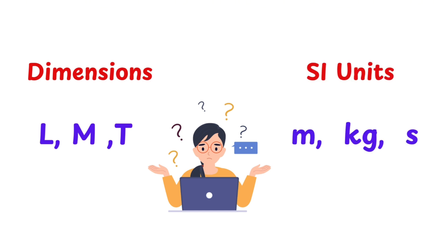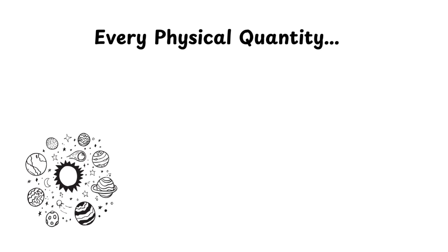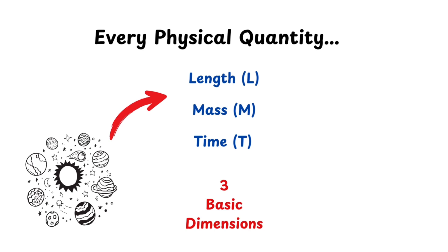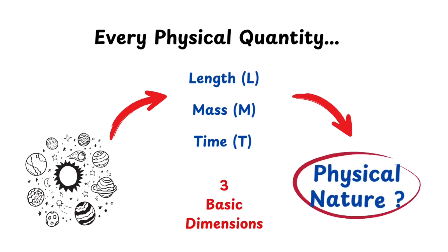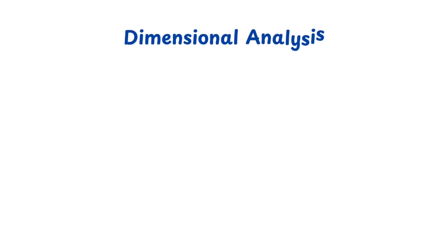Every physical quantity in the universe can be expressed using some combination of these three. When we talk about the dimension of a quantity, we're really asking: what is its physical nature?